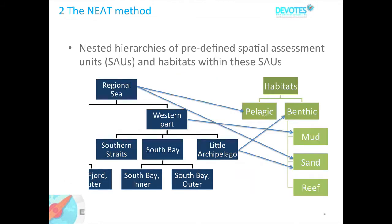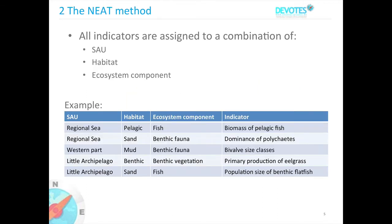Starting with the spatial assessment units, these are themselves connected to a hierarchy of habitats, and every habitat can be connected to any number of spatial assessment units and vice versa. We zoom into the ecosystem coming from the spatial assessment unit — a region defined geographically — then look into the habitats within it. Within the habitat, we have the ecosystem components, typically biological components, and those are then assessed using indicators.